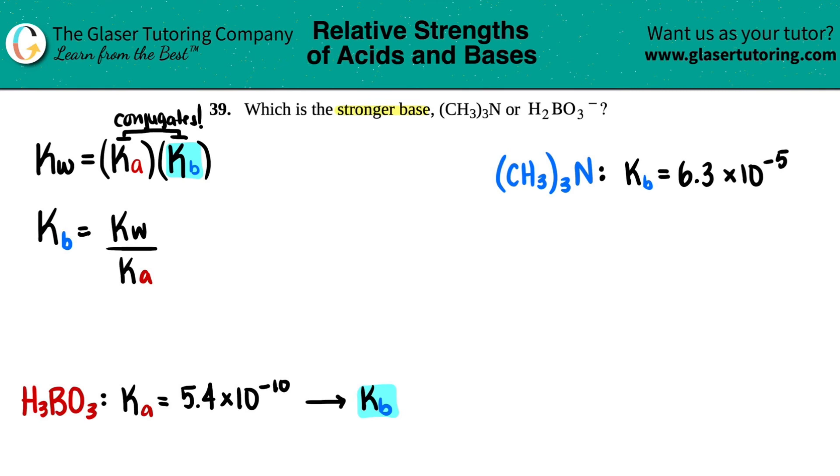We know that the Ka was 5.4 times 10 to the -10. If we're trying to solve for Kb, what's Kw? Well, Kw is a constant value - it depends on temperature, but there was no temperature here, so we're assuming room temp. The values in the back of the textbook are at room temp, so it works out. The Kw value at room temp is 1.0 times 10 to the -14. You probably have to memorize that number.